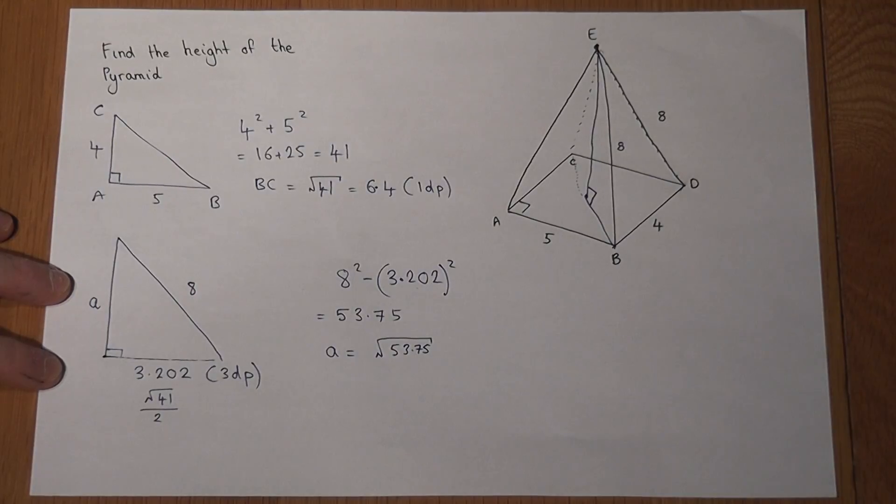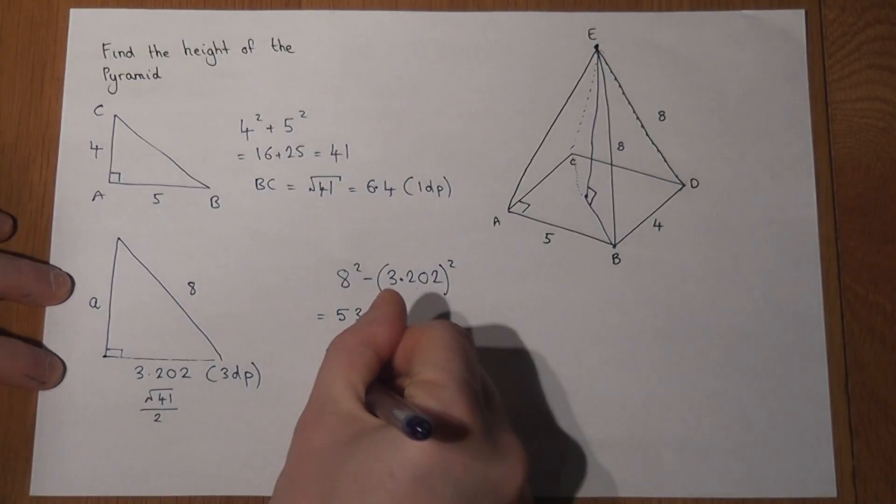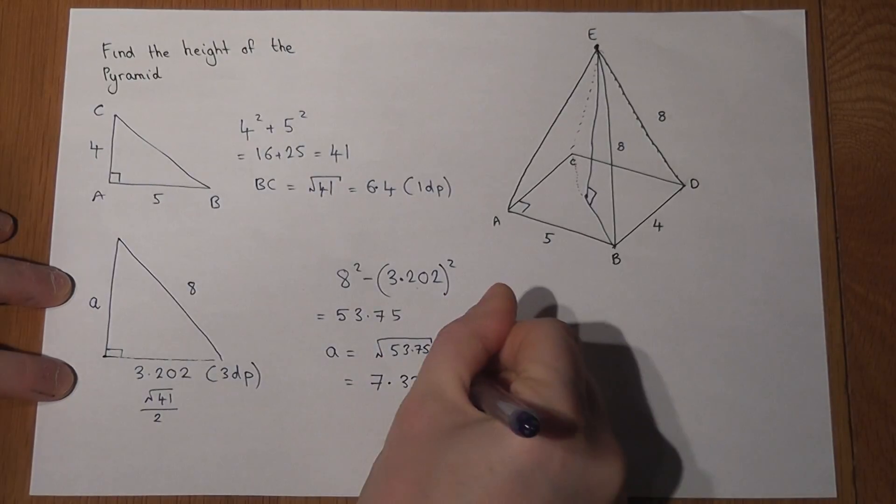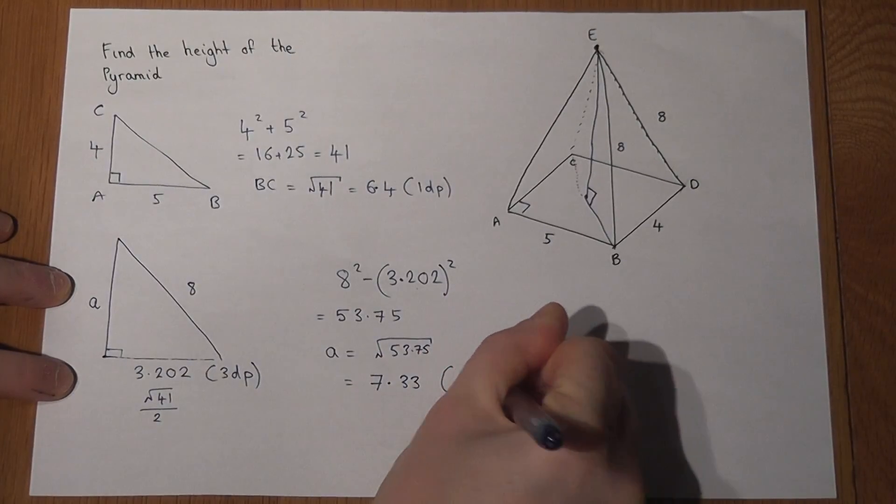Then to find that length of a, I finish off by square rooting. So root of ans, which just equals 7.33 to two decimal places.